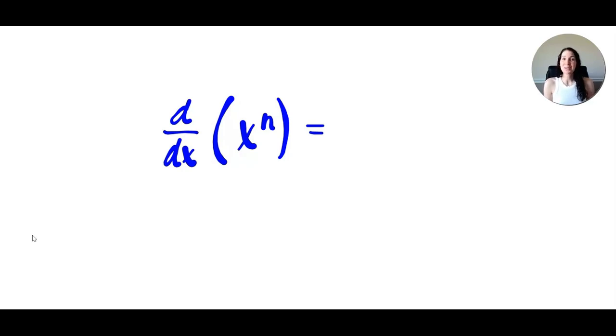Alright, let's get to the first one, the tried and true power rule. That would be d/dx of x to the n equals n times x to the power of n minus 1.